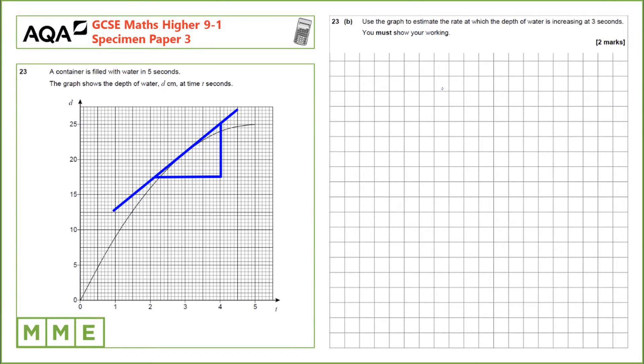Question 23b. Use the graph to estimate the rate at which the depth of water is increasing at 3 seconds. You must show your working. So what I've done is I've put a tangent through that touches the graph at 3 seconds and then I've put in some construction lines to try and estimate the height of the change in y over the change in x.